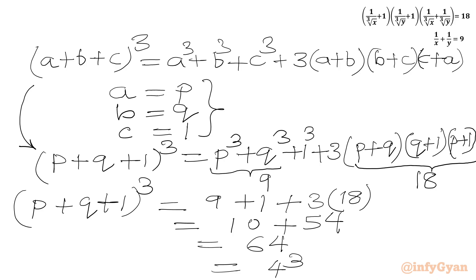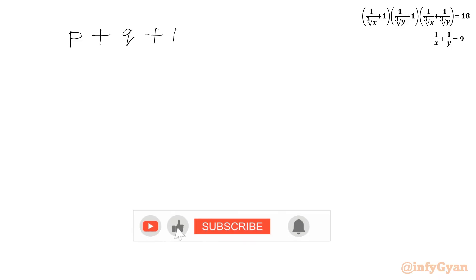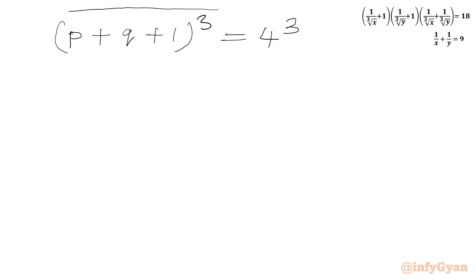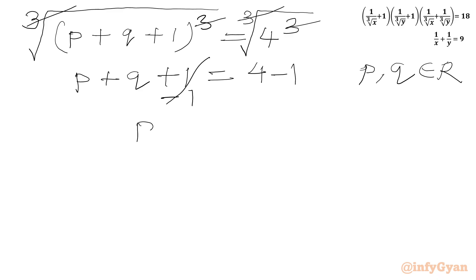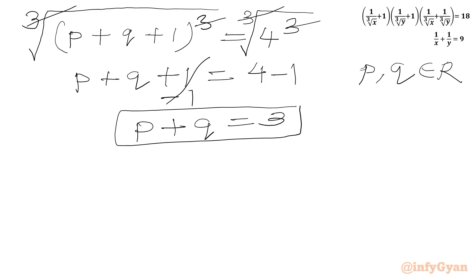So P plus Q plus 1 whole cube equals 4 cube. Taking cube root of both sides, the cube root and cube cancel out, giving P plus Q plus 1 equals 4 for real P and Q. Subtracting 1 from both sides, we get P plus Q equal to 3. Let's call this equation number 3.